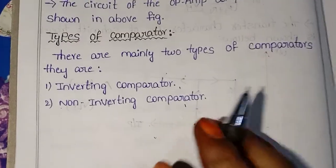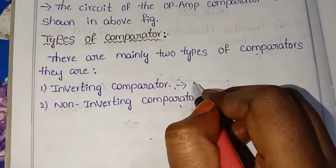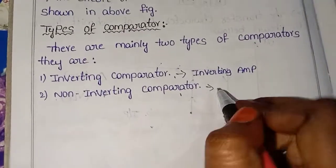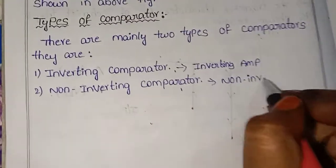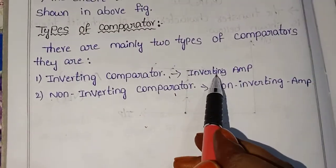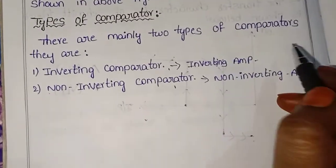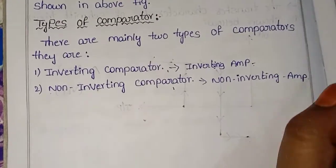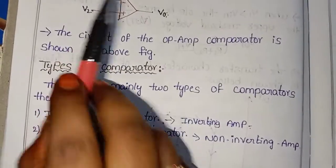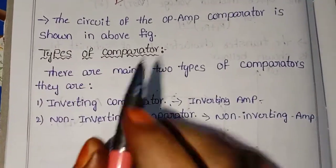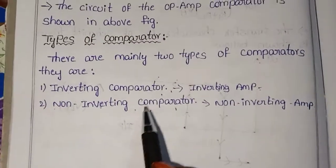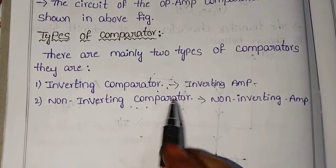The inverting comparator is similar to the inverting amplifier, and the non-inverting comparator is similar to the non-inverting amplifier, but there is a small difference. In the inverting comparator, the input is given to the inverting terminal and the reference voltage is given to the non-inverting terminal. In the non-inverting comparator, the input is given to the non-inverting terminal and the reference voltage is given to the inverting terminal.